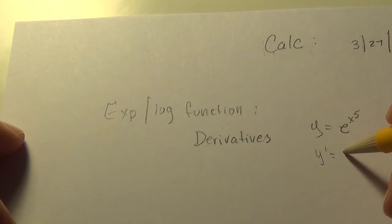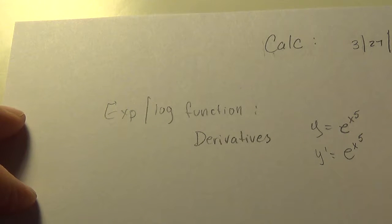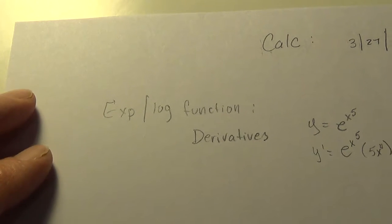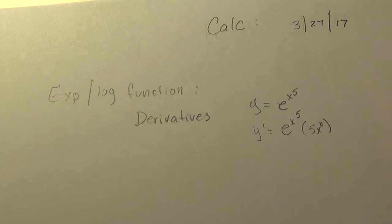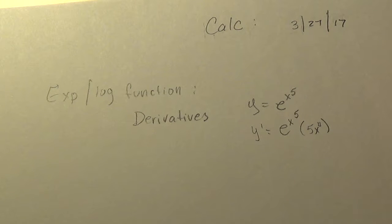So y prime, the derivative, would be e to the u du, so e to the x to the fifth times the derivative of x to the fifth which is 5x to the fourth.